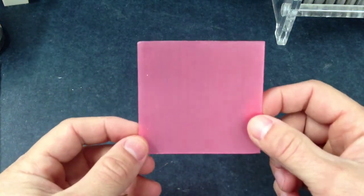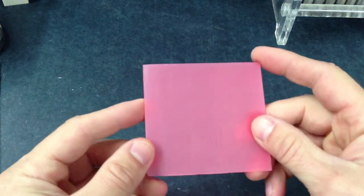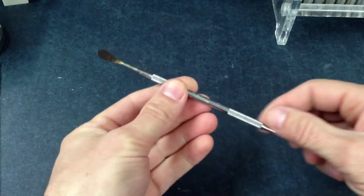Base plate wax to block out undercuts, and a number seven wax spatula for use with the base plate wax.